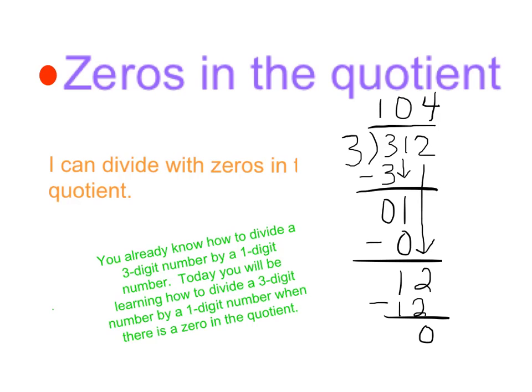Zeros in the quotient. I can divide with zeros in the quotient. You already know how to divide a three-digit number by a one-digit number. Today, you will be learning how to divide a three-digit number by a one-digit number when there is a zero in the quotient.